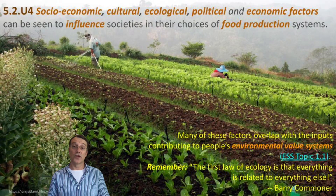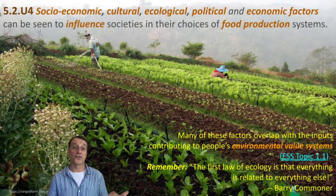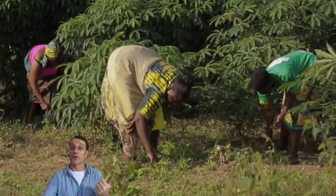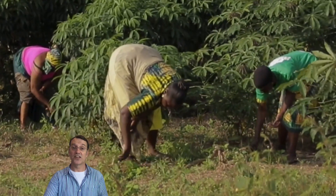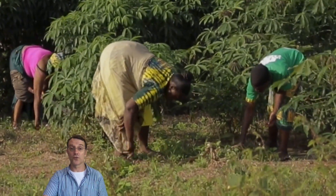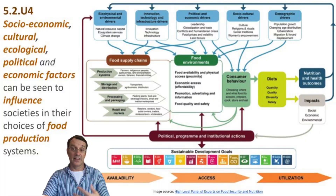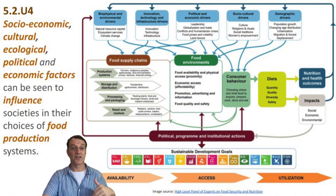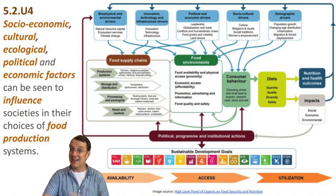Our food choices are influenced by more than just hunger. Cultural traditions, economic situations, and even political systems all play a role. For example, a traditional farming scene might reflect deep-rooted cultural practices. These factors are all interconnected — a change in one area can ripple through the entire food system. As ecologist Barry Commoner said, everything is connected to everything else.